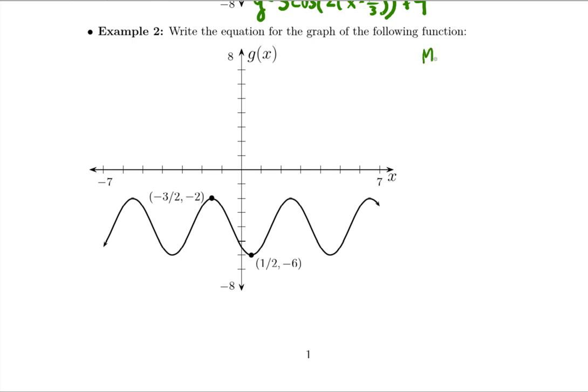How about the midline? So the midline we are down here at negative six for the min. We're up at negative two for the max. So that must mean the midline is right in the middle at negative four. And then that means our amplitude then is two.